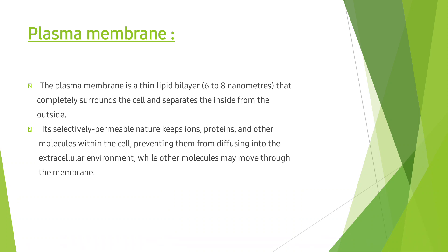About plasma membrane: the plasma membrane is a thin lipid bilayer about 6 to 8 nanometers that completely surrounds the cell and separates its inside from outside. Its selectively permeable nature keeps ions, proteins and other molecules within the cell, preventing them from diffusing into the extracellular environment, while other molecules may move through the membrane.